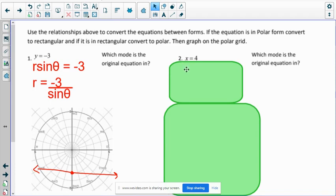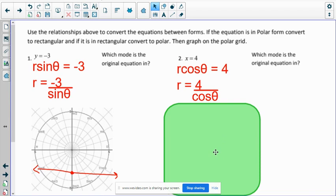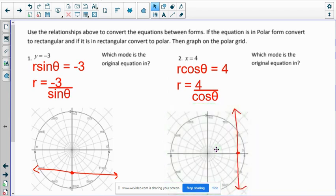So we can change x to be r cosine. And again, you can find r by itself, but you don't necessarily have to. It's totally fine to leave it as r cosine. And since it's positive four, I would just count four on the polar axis and go straight up and down.